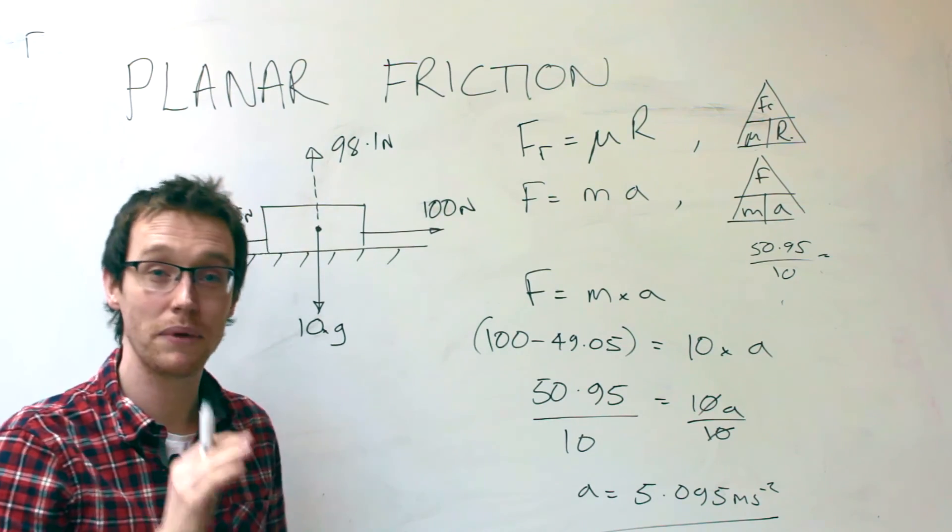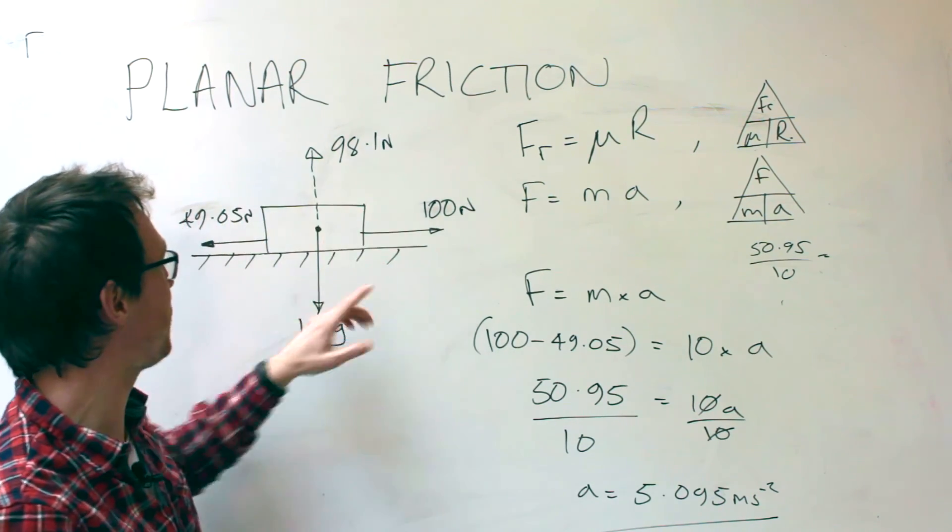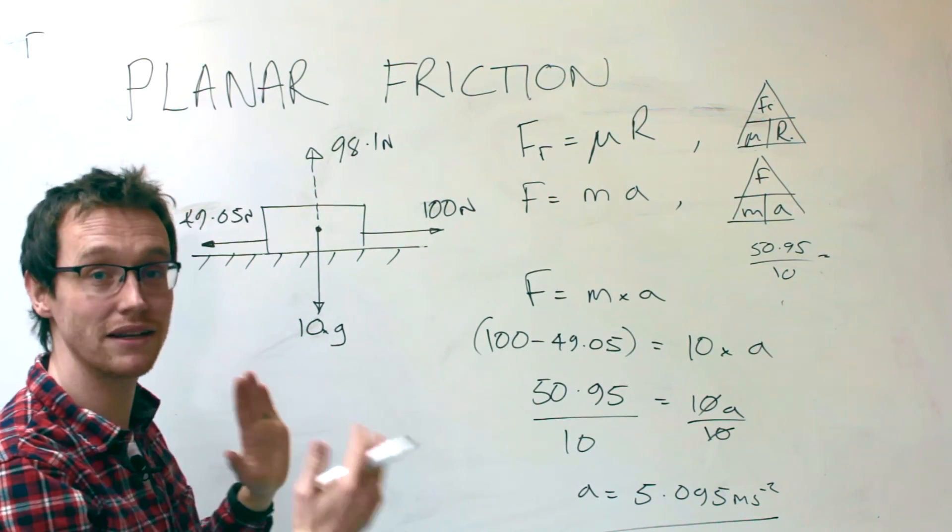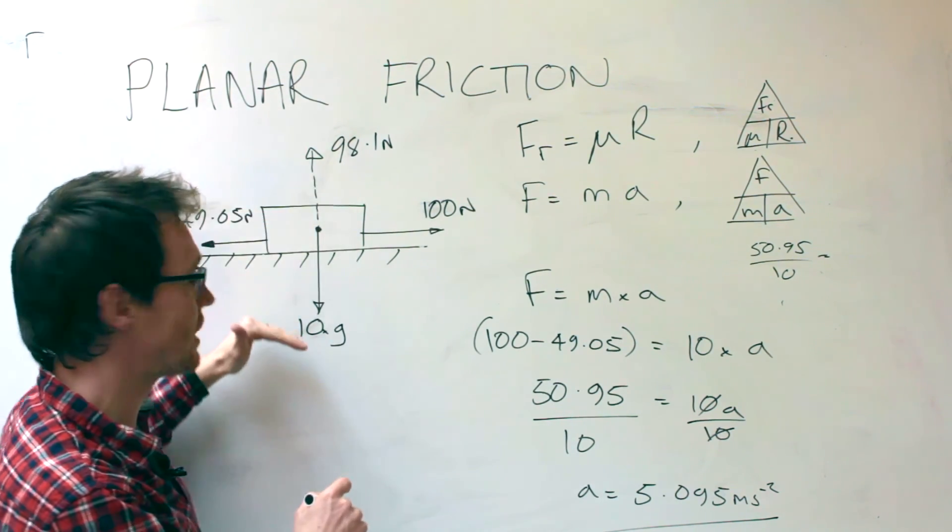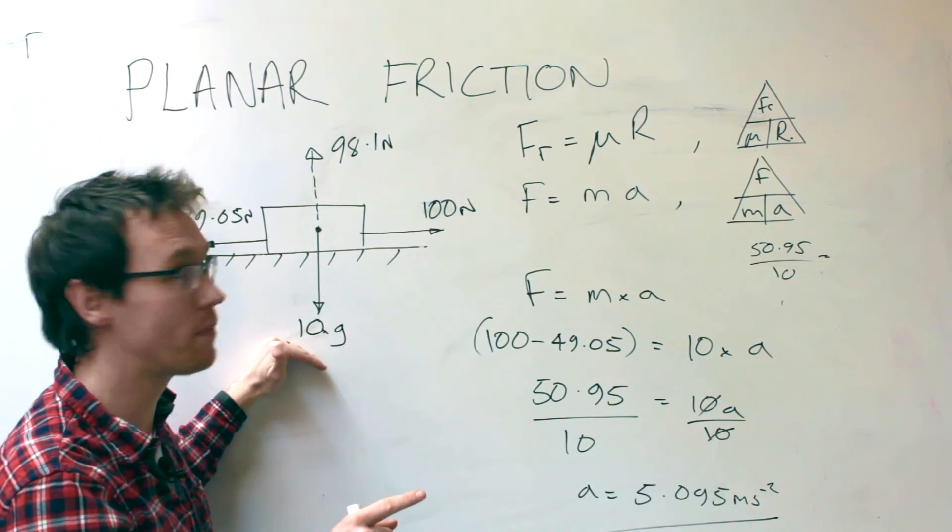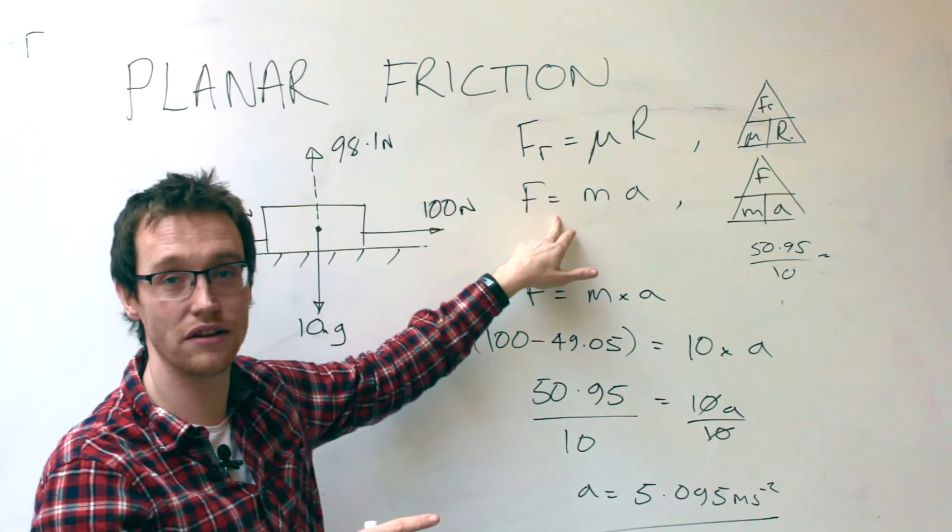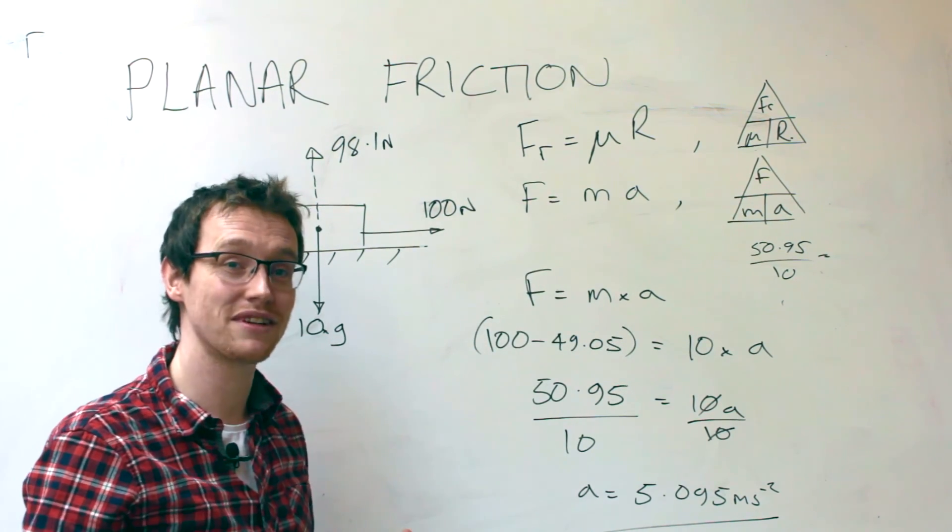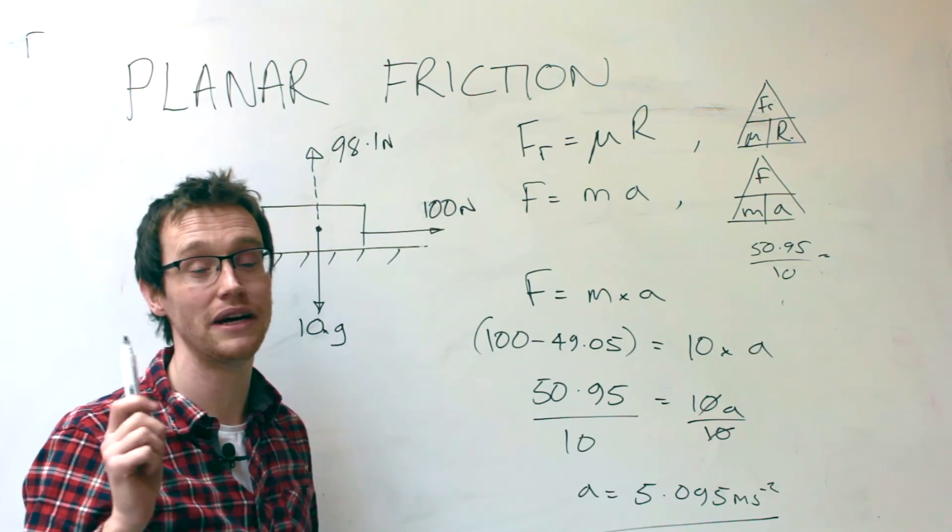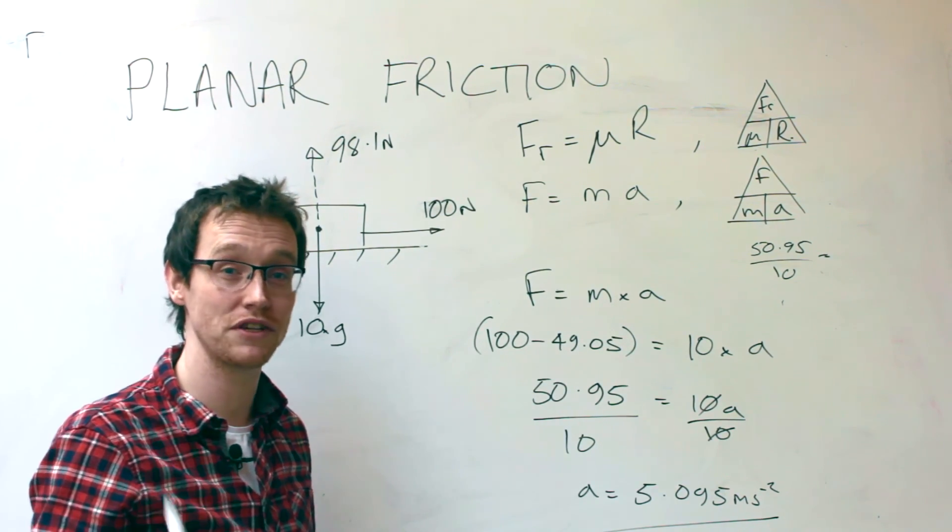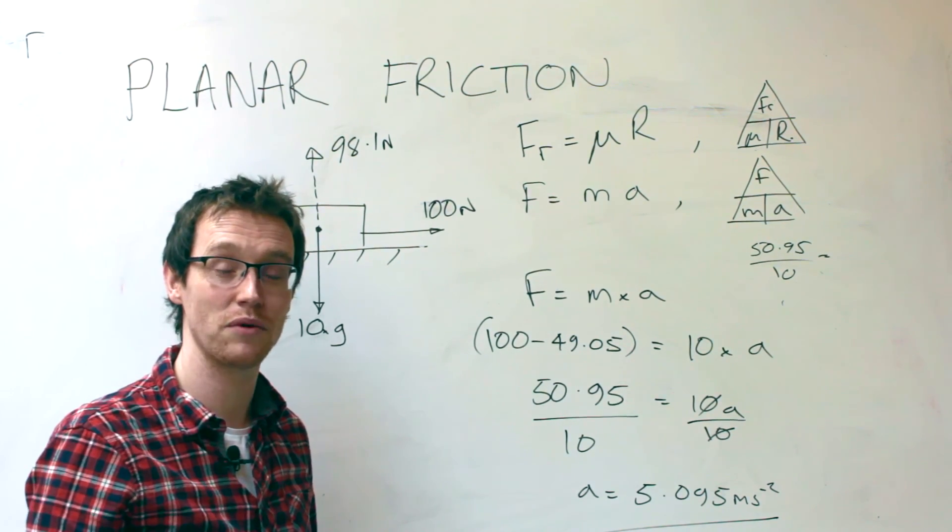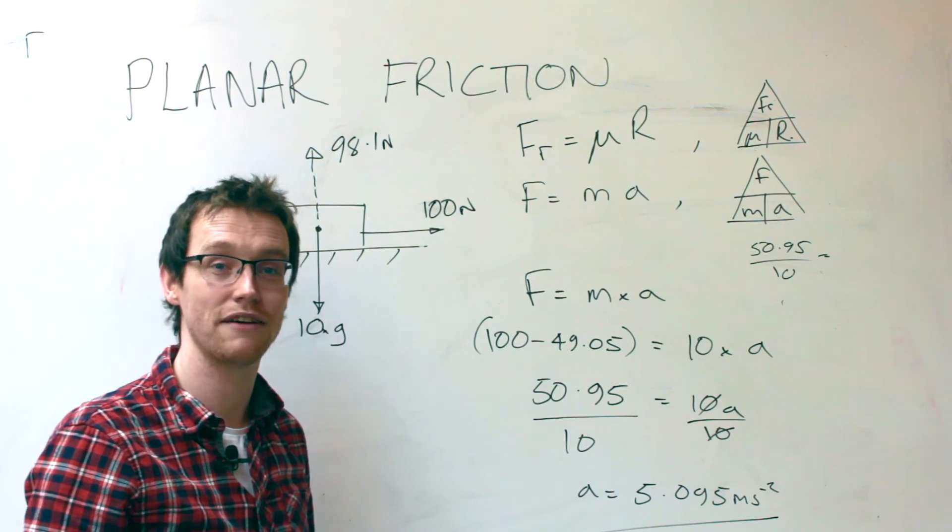So there we have it, calculating planar friction. We've looked at all the different parts. We've got tractive and frictional force. Those two must balance out if the thing isn't moving. We've got the reaction force and the force due to gravity. Remember, gravity is 9.81. We've also looked at Newton's second law, F equals MA. So if you're one of my students, there'll be a worksheet where you can have a play around and have an experiment. There's also an experiment coming up where you'll physically test out some coefficients of friction. However, if you're watching on YouTube, you might want to watch the next video in the series where we're going to look at friction on an inclined plane.